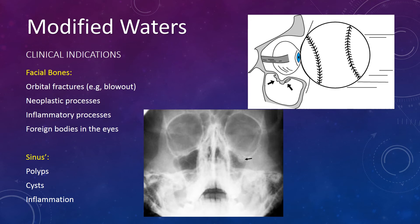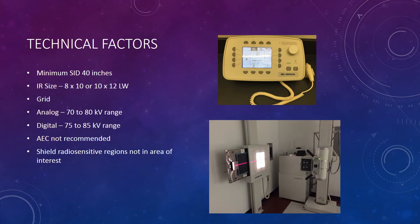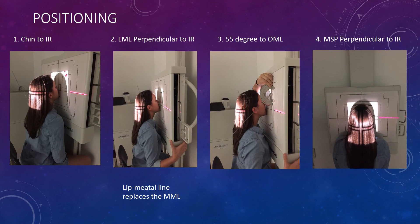The modified Waters is done for the same reasons as Waters but has a focus on the floors of the orbits. This projection is used when a patient cannot fully extend to the MML. The technical factors for the modified Waters are the same as the parietal acanthial Waters. The only way the positioning differs from the Waters to the modified Waters is that the lips-nasal line is perpendicular to the IR, forming a 55 degree angle to the OML.